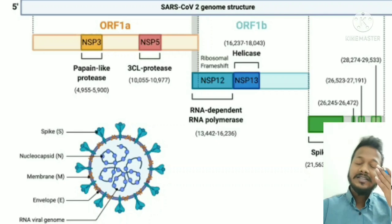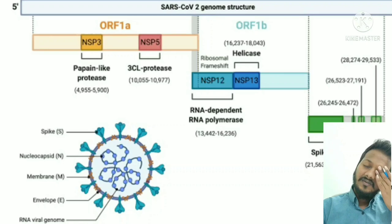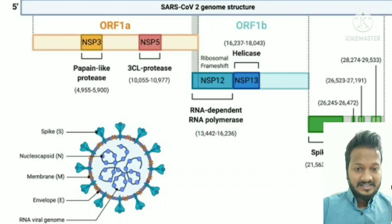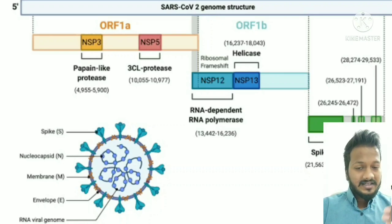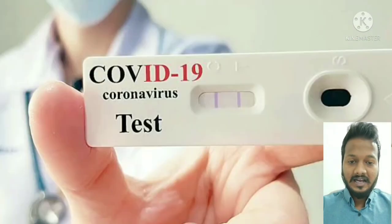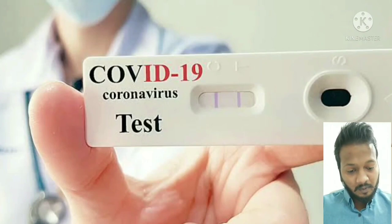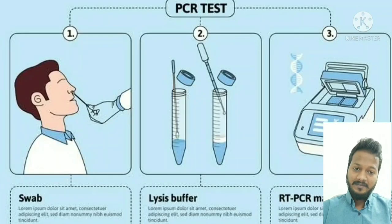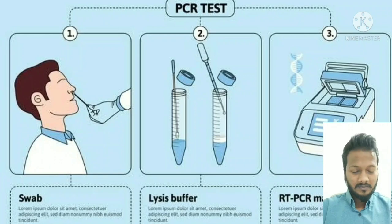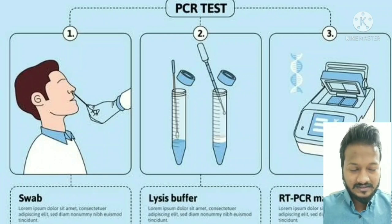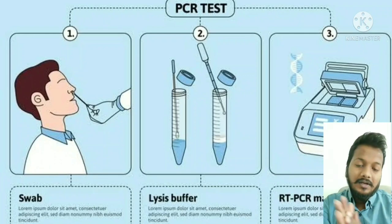Why am I stressing these proteins and genes? Because these proteins act as antigens — these antigens are targeted in rapid antigen tests. And these protein-coding genes are targeted in real-time PCR. So proteins and genes are used for diagnostic purposes.